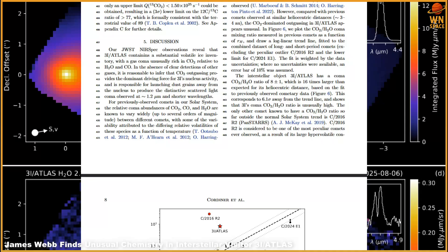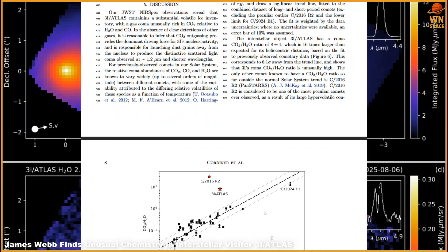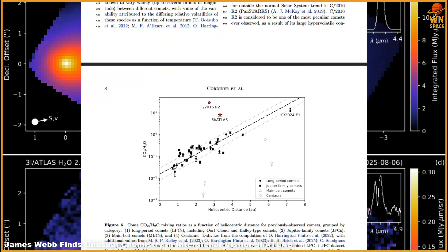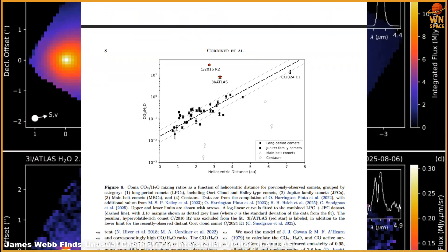NASA researchers, however, emphasize that the data strongly support it being a natural, volatile-rich comet with unique chemistry. While the debate continues, one thing is certain: 3I Atlas has given us a rare glimpse into the diversity of planetary systems across the galaxy.